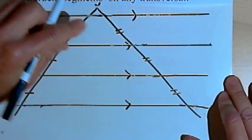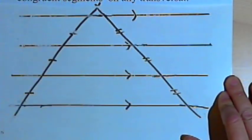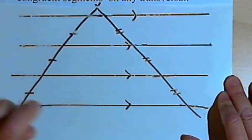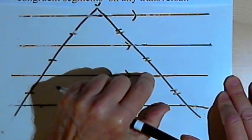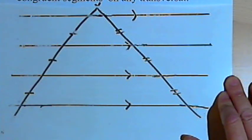If that's the case, then I can draw a second transversal at any angle I want, and the segments between the parallel lines there are also going to be congruent. They'll also be the same length.